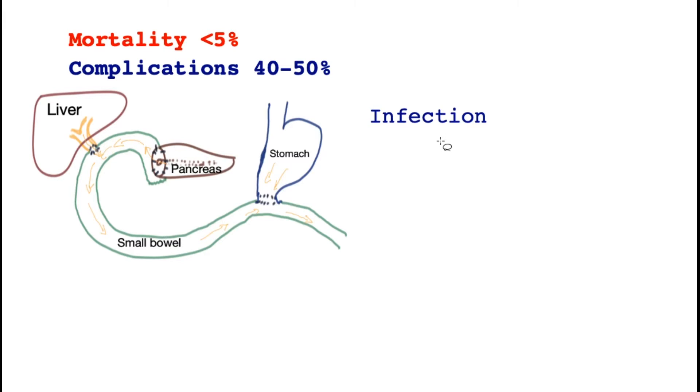Infection may arise, and commonly in the early part of recovery it is the chest. But infections may occur within the abdomen or the wound as well. Leak from the join is a constant concern.